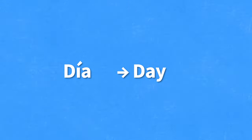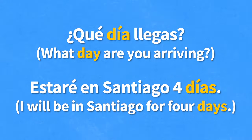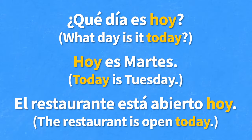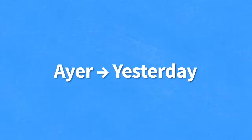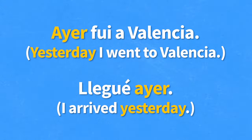Moving on, we have the word día, which means day. Its plural form is días, days. For example, ¿qué día llegas? — What day are you arriving? Or, estaré en Santiago cuatro días — I will be in Santiago for four days. A very important word to know is hoy, meaning today. For example, ¿qué día es hoy? — What day is it today? Hoy es martes — Today is Tuesday. El restaurante está abierto hoy — The restaurant is open today. We also have the word ayer, meaning yesterday. So you could say, ayer fui a Valencia — Yesterday I went to Valencia. Or, llegué ayer — I arrived yesterday.